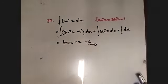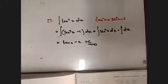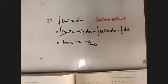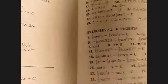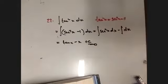Let's verify in the textbook. Number 23: tan x − x + c. Tan x minus x plus c — that's confirmed.